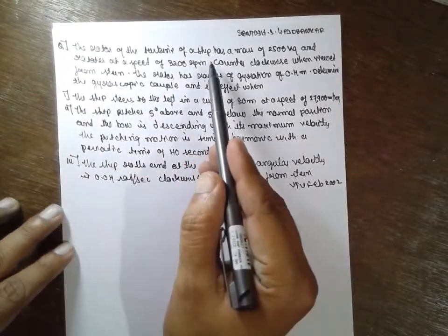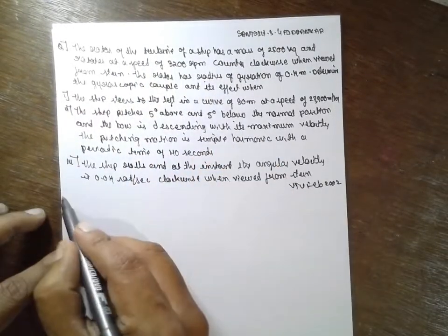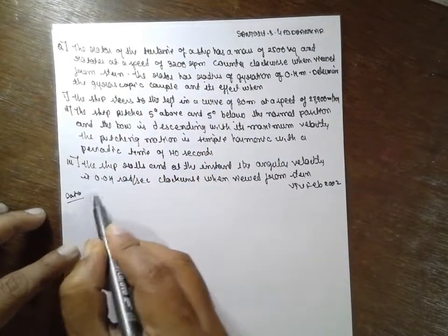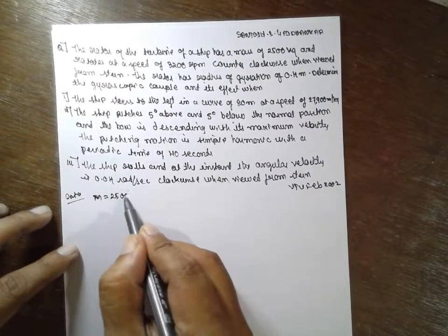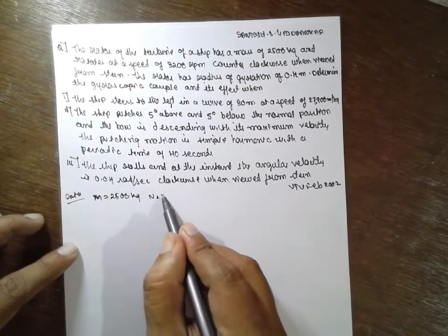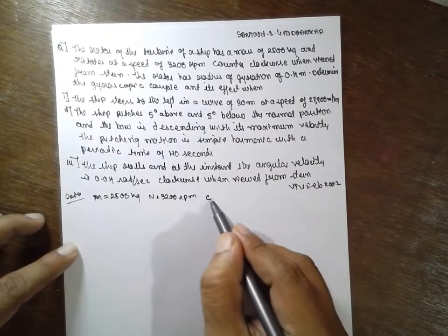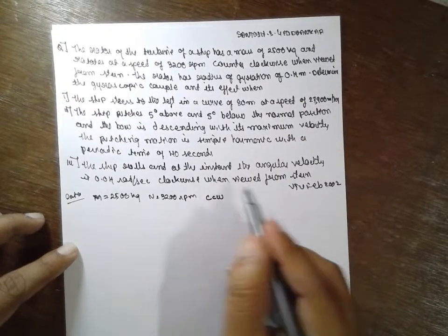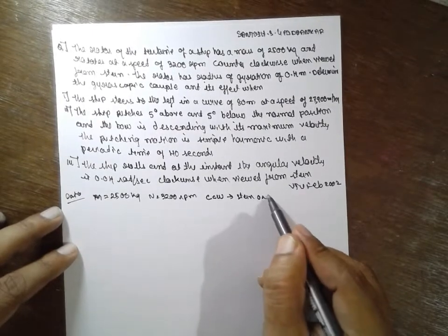The rotor of the turbine of the ship has a mass, M is equal to 1500 kg, and the rotor at a speed of 3200 rpm counterclockwise, viewed from the stern or aft.